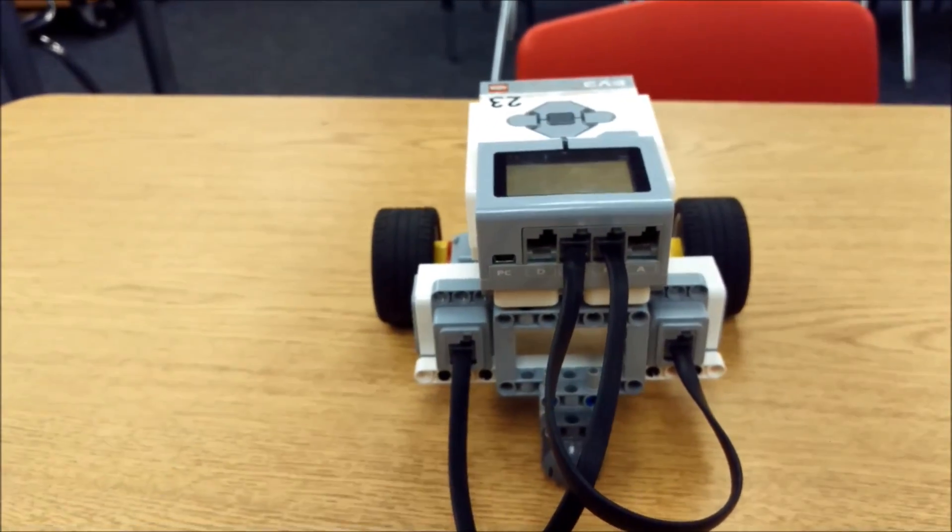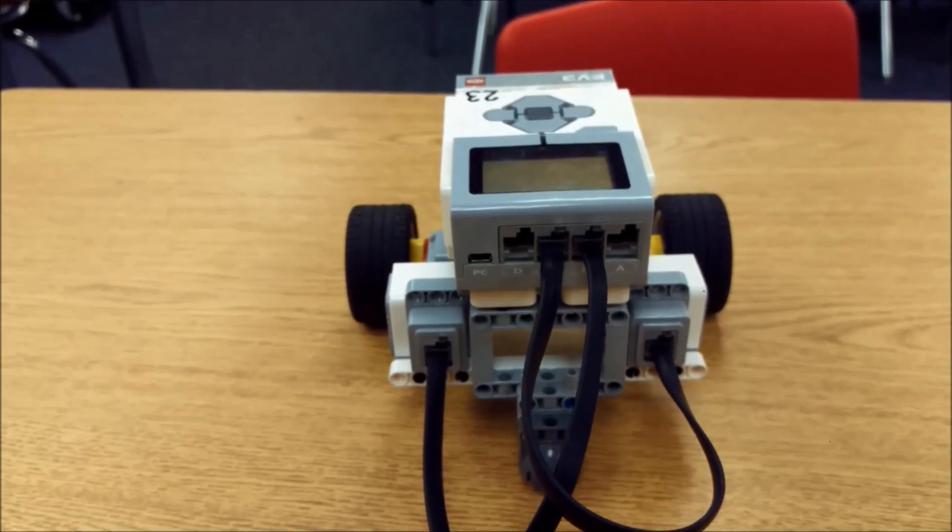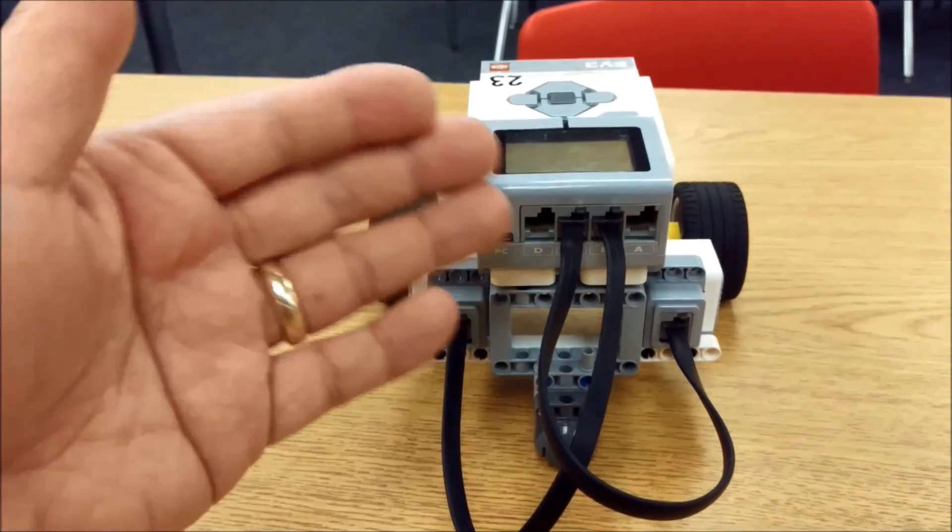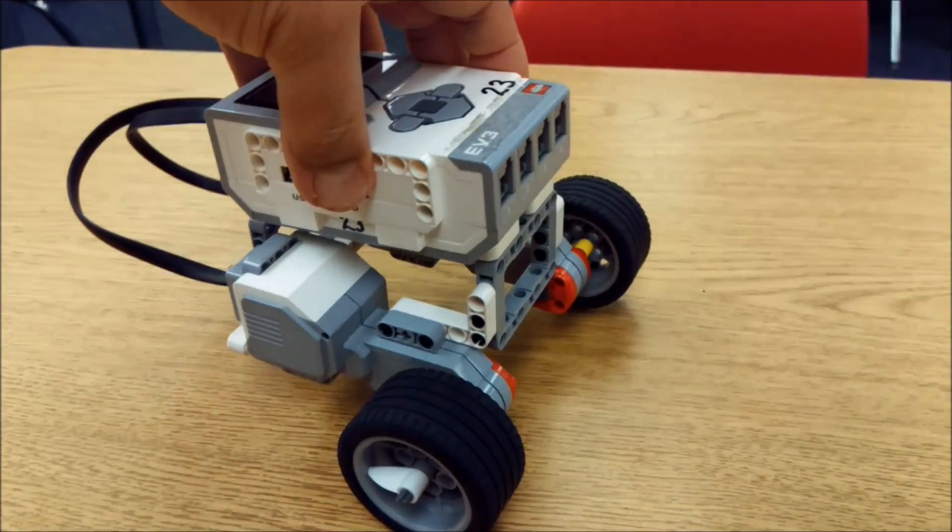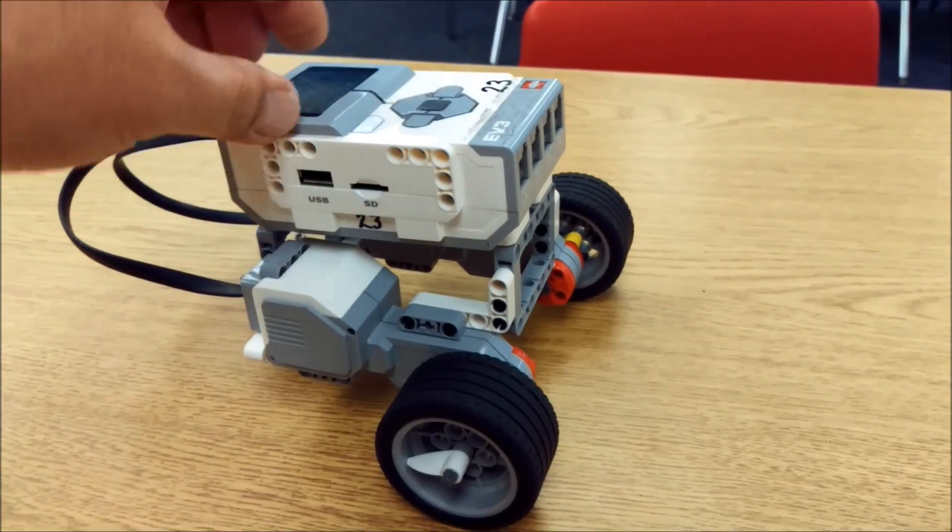So the reason we're going to crisscross the cables here is so that when we want to program a right turn, it really will be a right turn because, again, the brick is backwards and we have adjusted for that. All right. So there you go, guys. There is your Riley Rover robot.